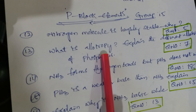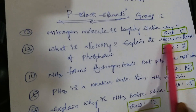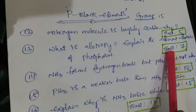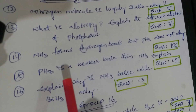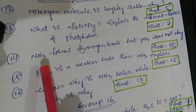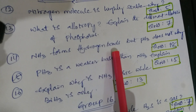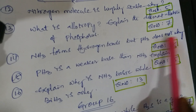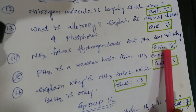Next question: what is allotropy? Explain the different allotropes of phosphorus - that is question number 7 in material and Telugu academy also. Next one: ammonia forms hydrogen bonds but PH₃ does not form - why? That is question number 18 from material.